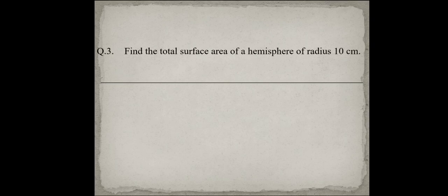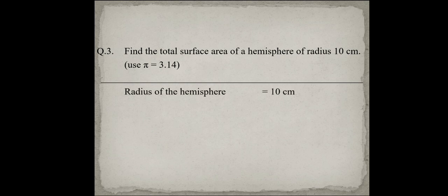In question number 3, find the total surface area of a hemisphere of radius 10 cm. A hemisphere means half of the sphere — if you cut a ball exactly in the middle, that is your hemisphere. Here the radius is 10 cm and the total surface area of a hemisphere is 3πr².